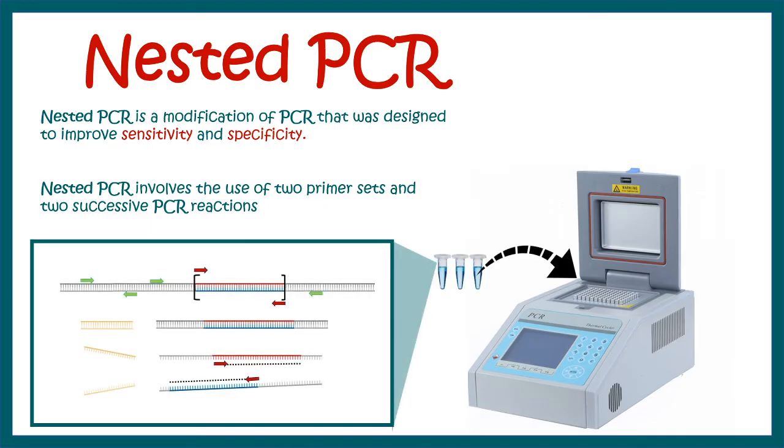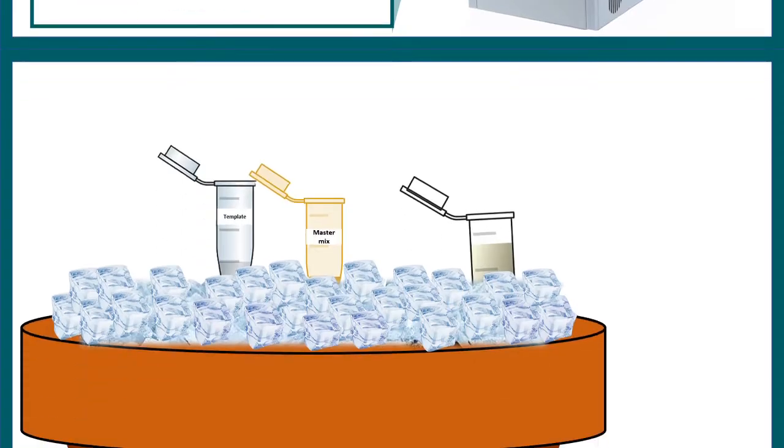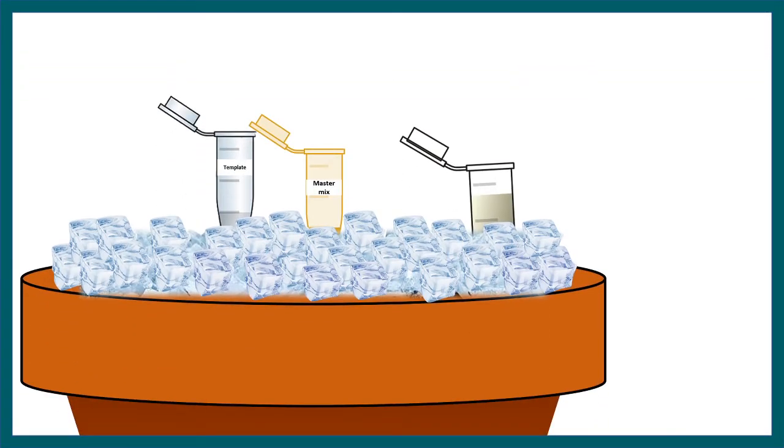In this video, we would understand the mechanism behind nested PCR. In any PCR reaction, we need to have a master mix and template. We mix it together in a PCR tube and then start. We would start the same procedure for the nested PCR as well.